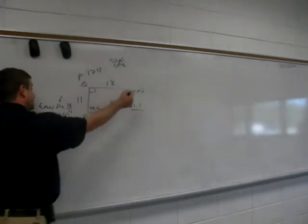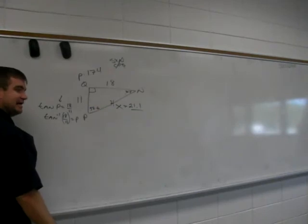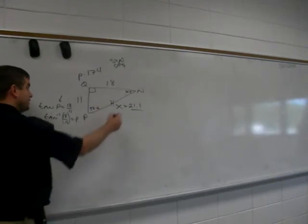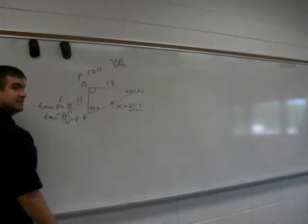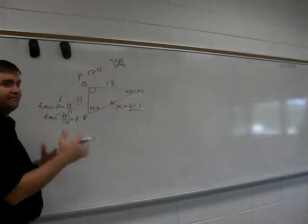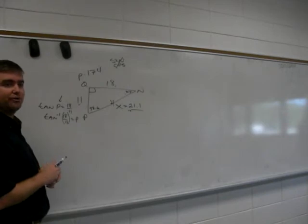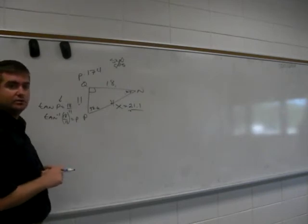Will this angle and this angle always add up to 90? Yes. They're complements. Will this side here always be bigger than 11 and bigger than 18? Yes, because it's a hypotenuse. Those are quick visual checks to make sure you're on the right track tomorrow on the test. Will you do number 7?